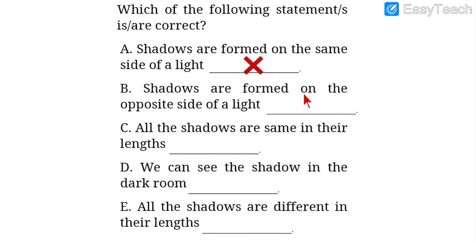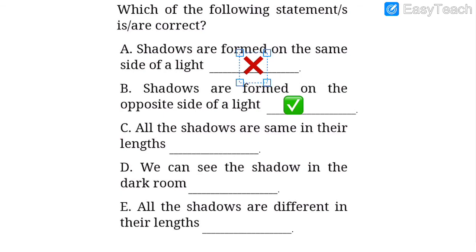Number two: shadows are formed on the opposite side of light — true, correct, so we put a tick mark. Number three: all the shadows are the same in their lengths — false. Morning, afternoon, and evening shadows are all of different lengths. Number four: we can see the shadow in a dark room — false, because when there is no light the shadows cannot be seen.